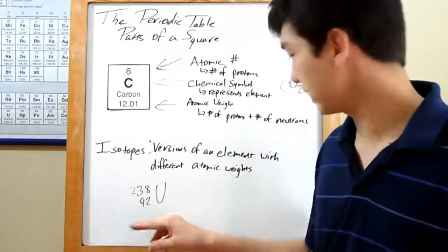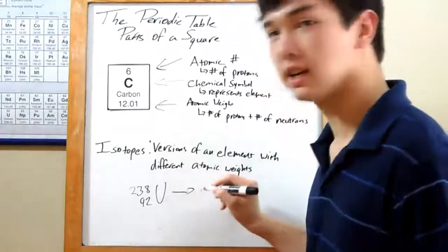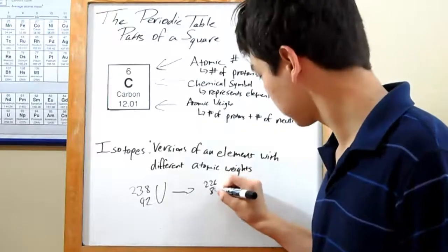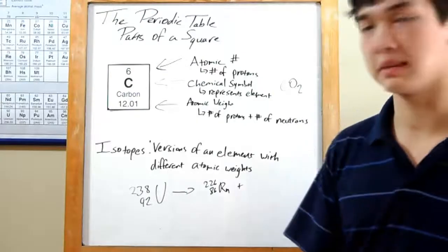This is how we write an element out in nuclear chemistry. Up here we have atomic weight, and down here we have atomic number. And let's just say it's split up into 226 radon and an unknown element, and you were asked to find what element that was.